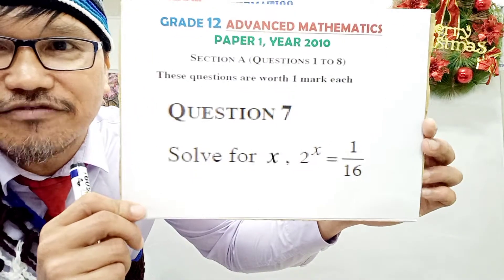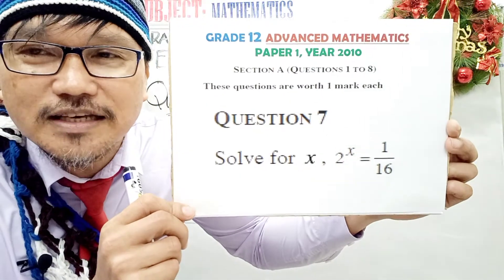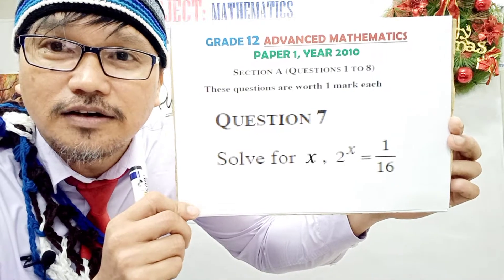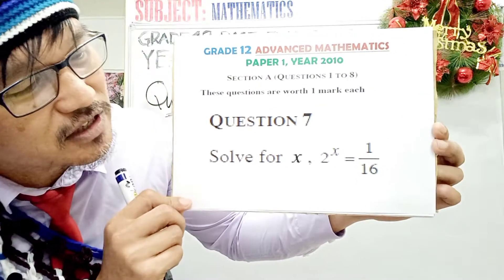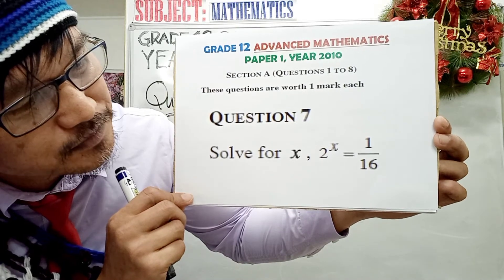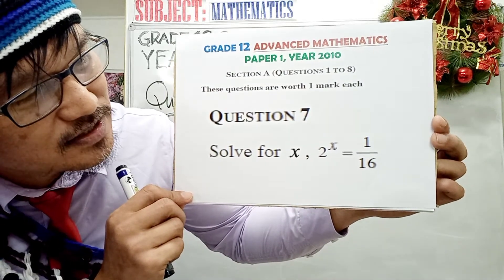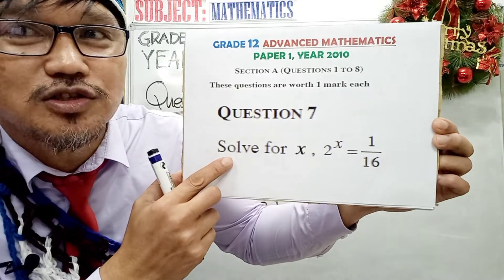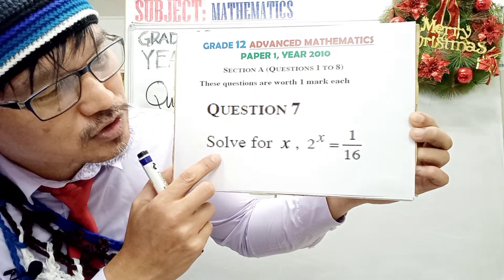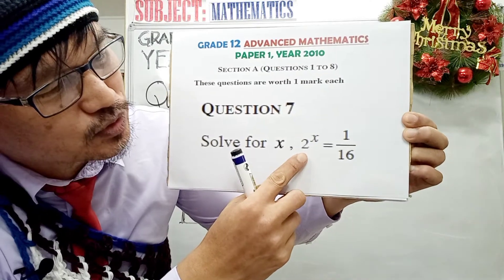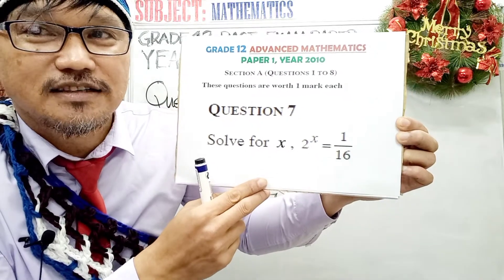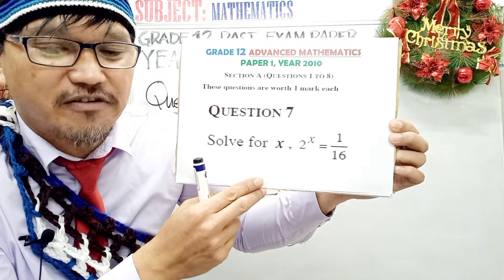Question number seven is on the topic of indices — an indicial equation. Solve for x, meaning you are going to find the value of x. The expression is 2 to the power of x equals 1 over 16. This question is worth one mark, so it's very straightforward.